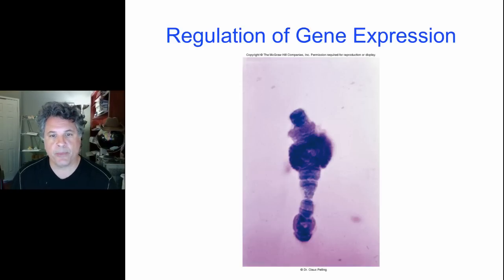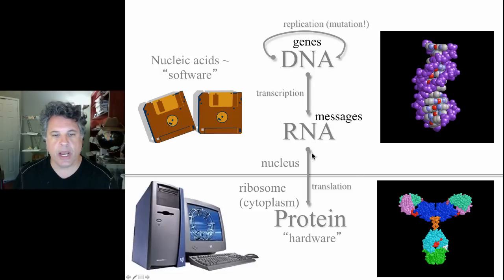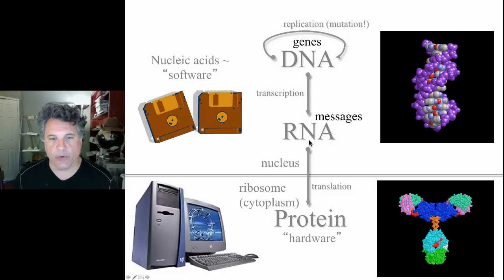We're going to start our discussion by recalling the central dogma: DNA being replicated, DNA being transcribed into RNA messages, and RNA — in most cases for protein-coding genes — being translated into proteins. Proteins serve as the hardware of the cell, while DNA and RNA serve as the software information. There are functional RNAs not translated into protein, but considering protein-coding genes, this is the general scheme of the central dogma.